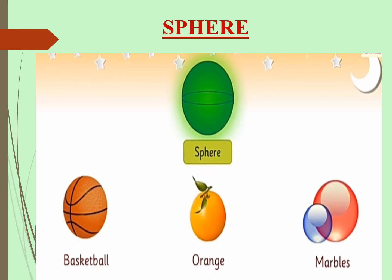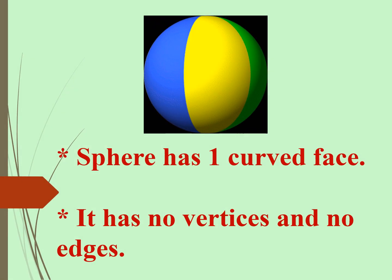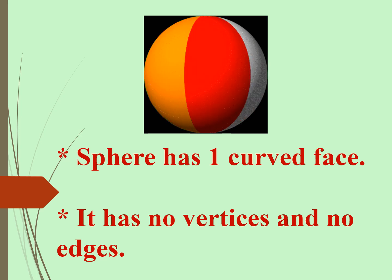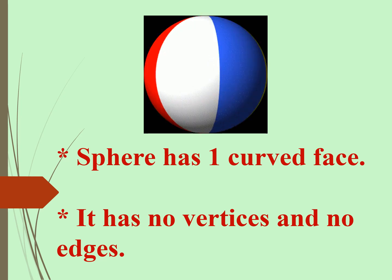Sphere. These are examples of sphere: basketball, orange, marbles. A sphere has 1 curved face. It has no vertices and no edges.